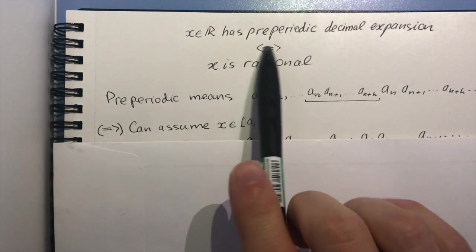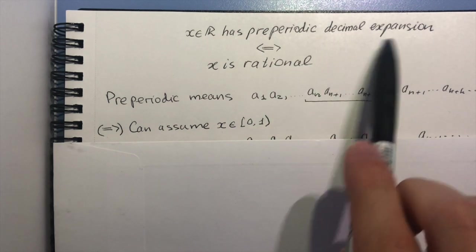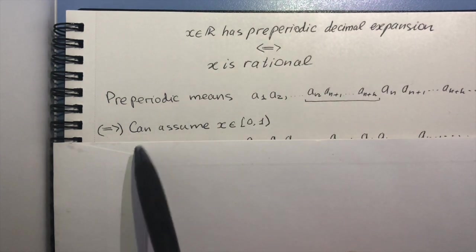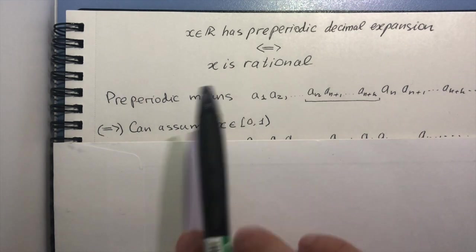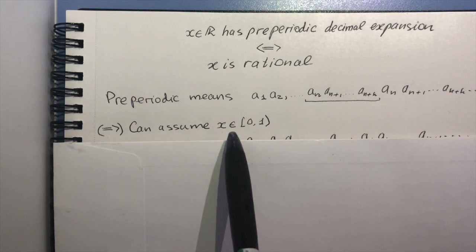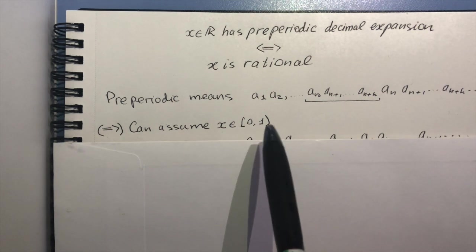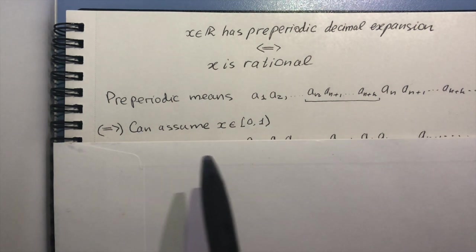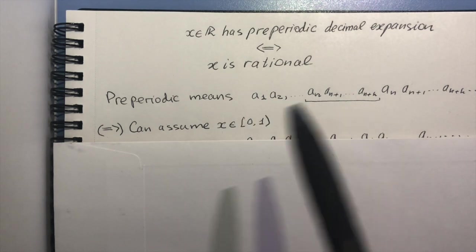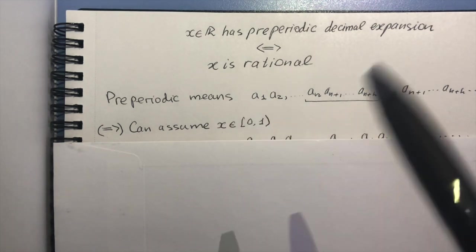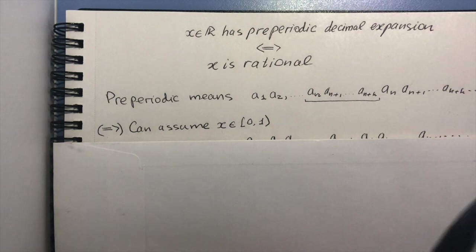So let us jump straight into the proof. We'll prove that if x has a preperiodic decimal expansion, then it's rational. So simplifying matters down, I will assume that x is less than 1 because what happens to the left of the decimal point is not important—if the number begins repeating itself, that will definitely hold after the decimal point.